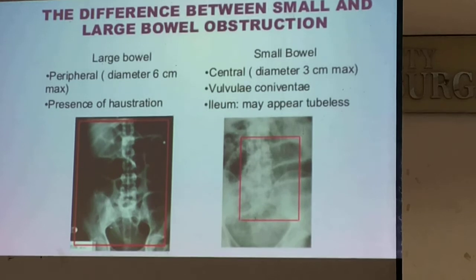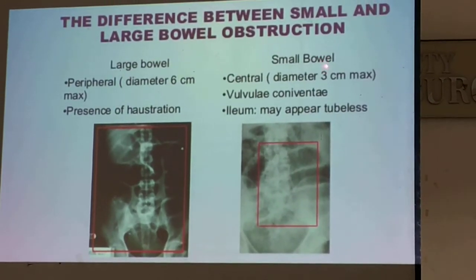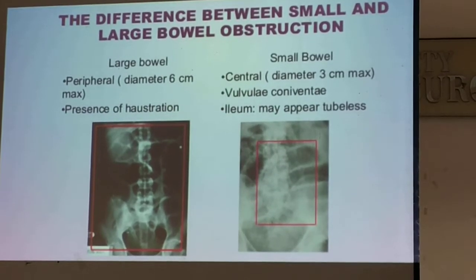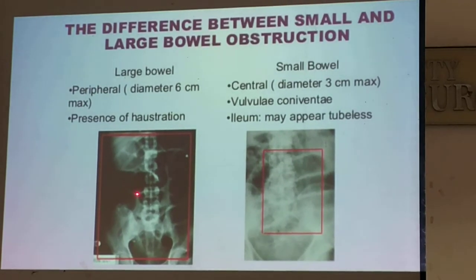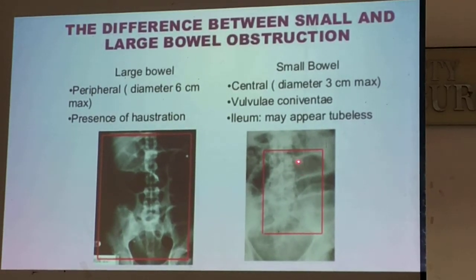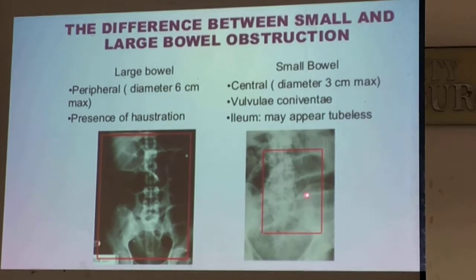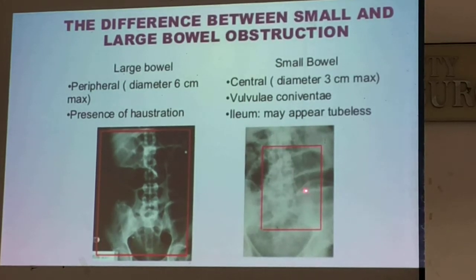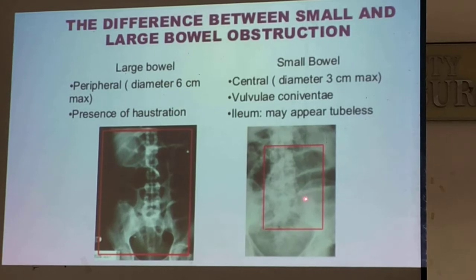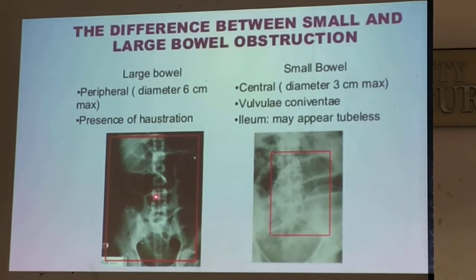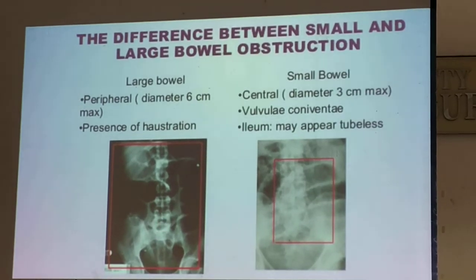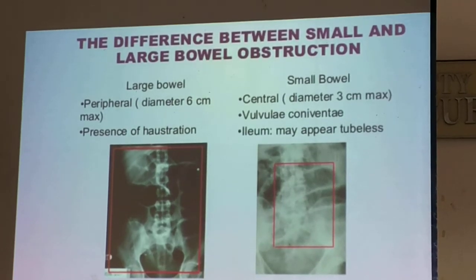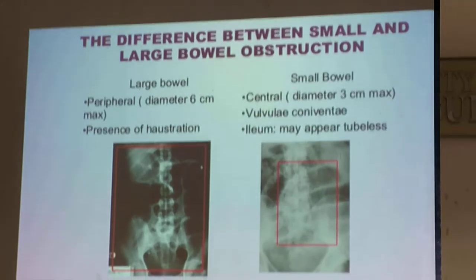The difference between your large and small bowel — by just merely looking at it (eyeballing), the diameter of the large bowel is bigger compared to the small bowel. This is your small bowel obstruction; this is your large bowel obstruction. Your basis is location and the diameter of the dilated segment of your bowel.